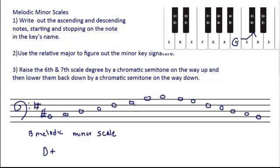Raising the sixth and seventh scale degrees: the sixth and seventh scale degrees in B minor are G and A. So we have to put in sharps to raise those by a semitone on the way up. Now on the way down, we want it to be just like our natural minor scale, so we have to lower those by the chromatic semitone. In order to cancel out those sharps, we put in natural signs — an A-natural and a G-natural on the way down to lower those back down.